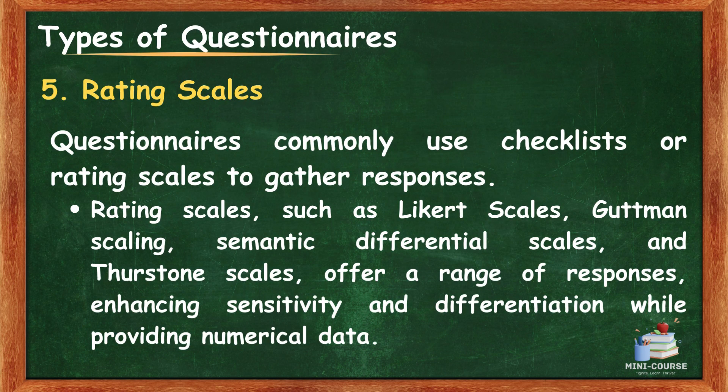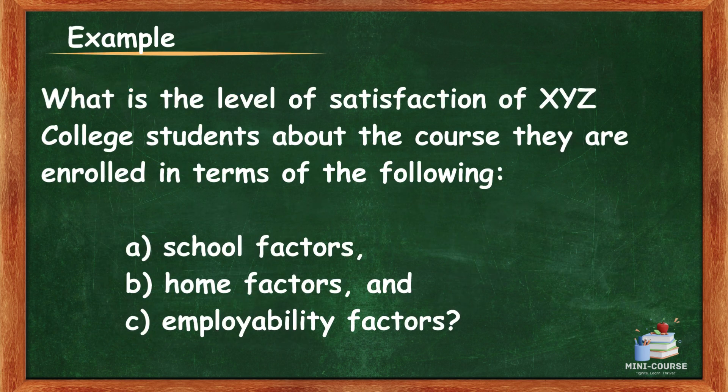Questionnaires commonly use checklists or rating scales to gather responses. Rating scales, such as Likert scales, Guttman scaling, semantic differential scales, and Thurston scales, offer a range of responses, enhancing sensitivity and differentiation while providing numerical data. For example, a Likert scale offers various response options to a question or statement.